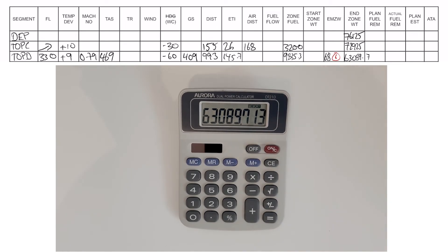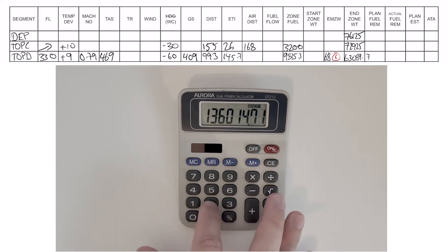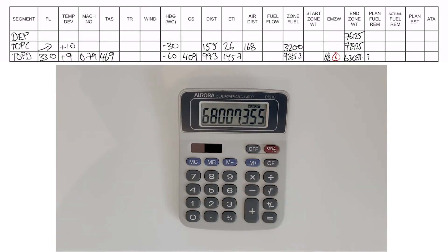Keeping this number in the calculator, I'm going to add back the start zone weight of 72,925 divided by 2, and that gives me the actual mid-zone weight, which is 68 tons pretty much on the dot. That means the estimated mid-zone checked out. I've got a big tick next to that to say I checked the mid-zone and it's correct.